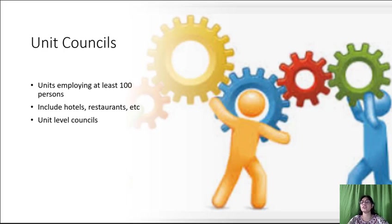The organizations include hotels, restaurants, hospitals, railways, road transport, etc. All financial institutions, banks, insurance, post and telegraph offices, food corporations, tourist organizations, etc. The scheme provides for unit level councils.